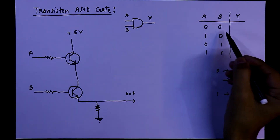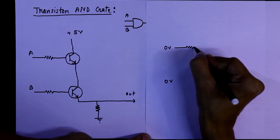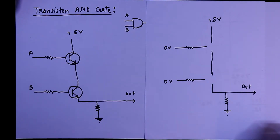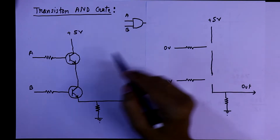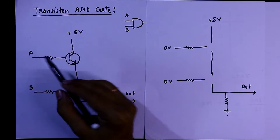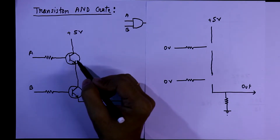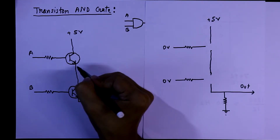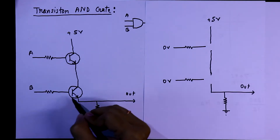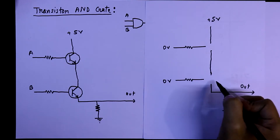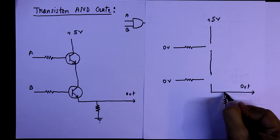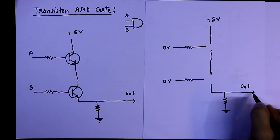For the first condition, we apply 0 volts to both inputs. When we apply 0 volts to the base of an NPN transistor, the transistor works as an open circuit — meaning there is no connection between collector and emitter. Both transistors are open, so the output is disconnected from the positive 5 volts. Through the pull-down resistor we get 0 volts at the output. So when inputs are 0, 0, the output is 0.